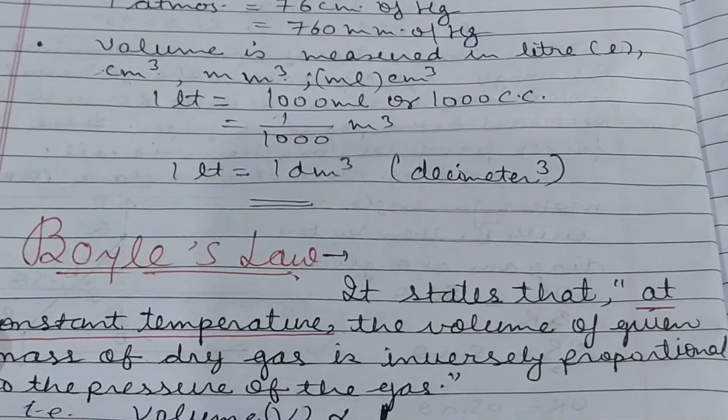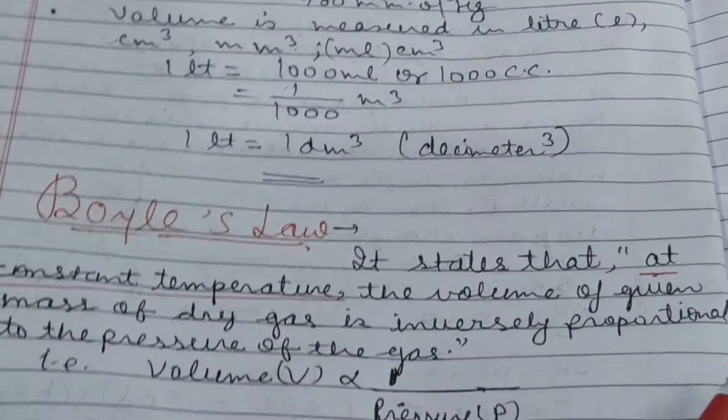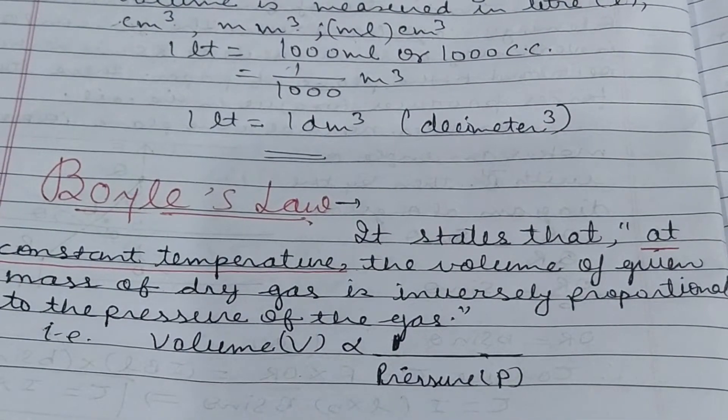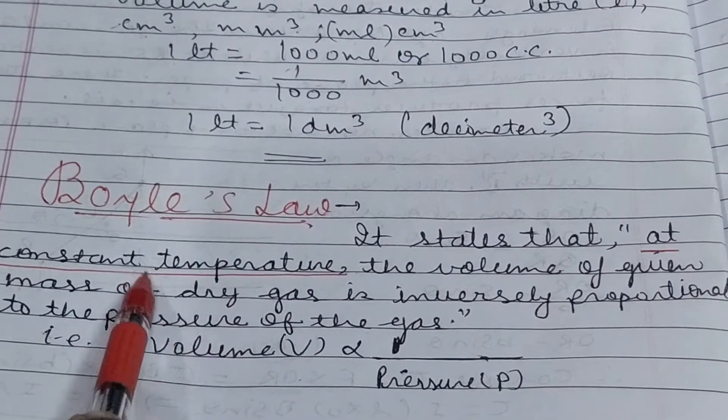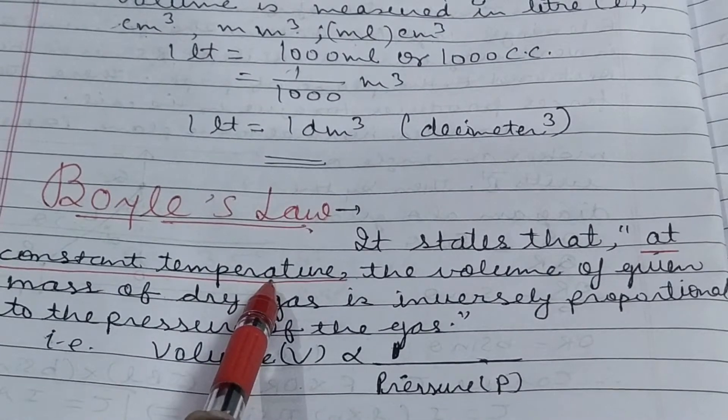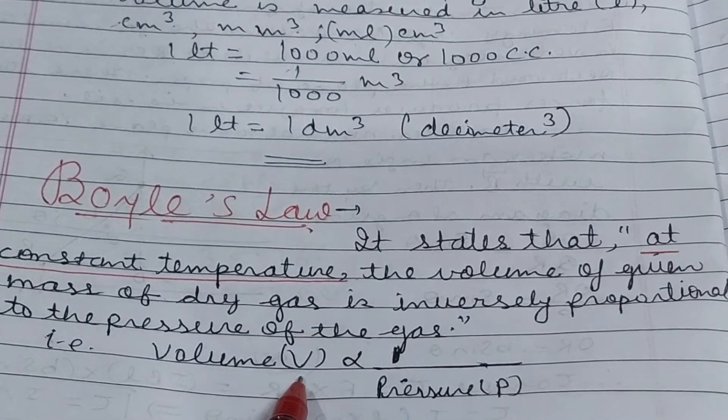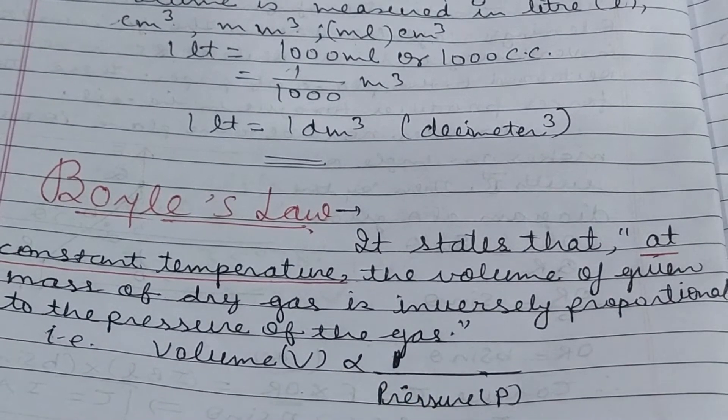Now we'll discuss the first law. There are three parameters of a gas: temperature, pressure and volume. If you keep one term constant, you can find the relation between the other two. In Boyle's law, temperature is constant, and the volume of given mass of dry gas is inversely proportional to pressure.